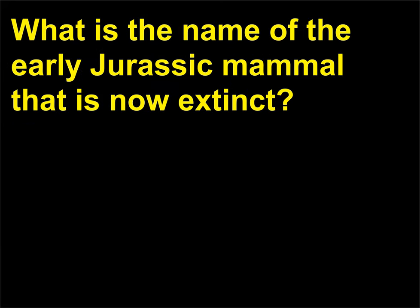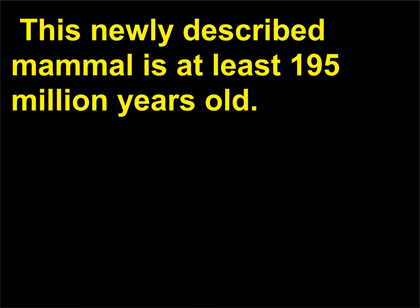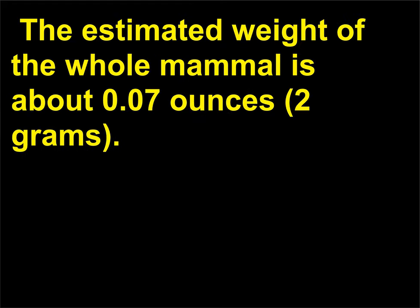What is the name of the early Jurassic mammal that is now extinct? The fossil site of the mammal Hadricodium wui was in Yunnan Province, China. This newly described mammal is at least 195 million years old. The estimated weight of the whole mammal is about 0.07 ounces, or 2 grams.